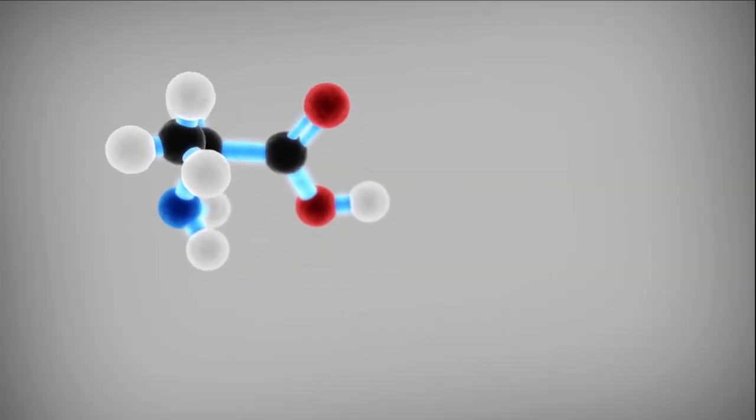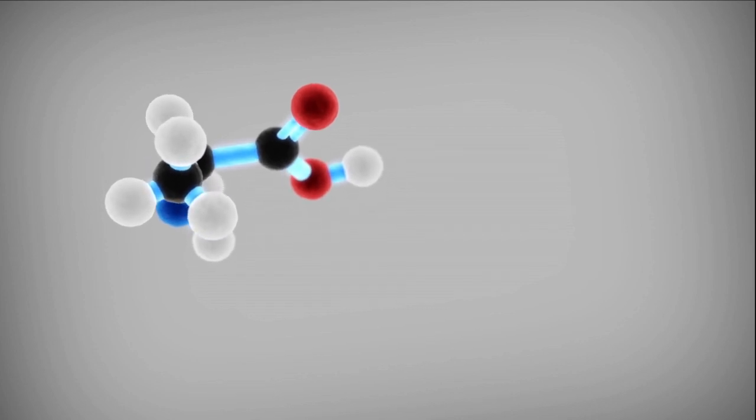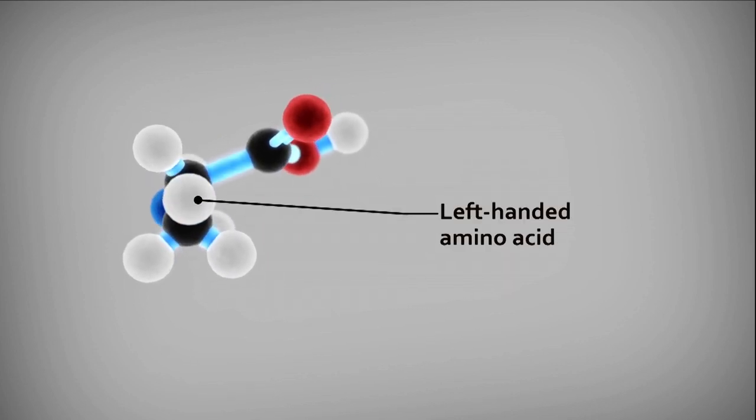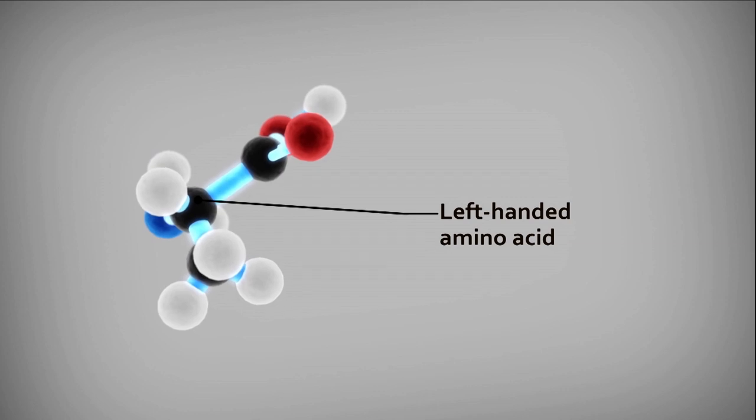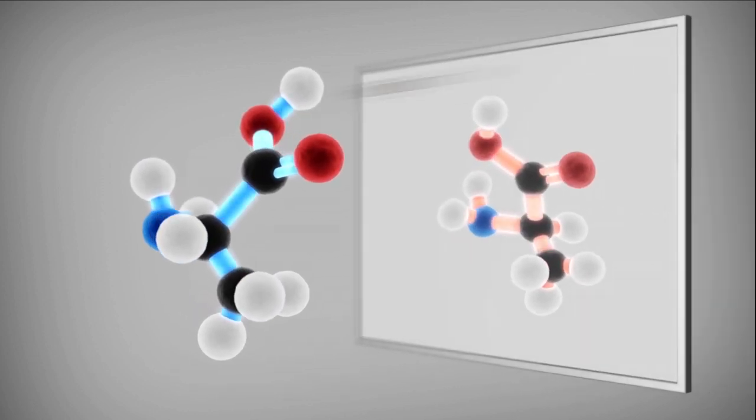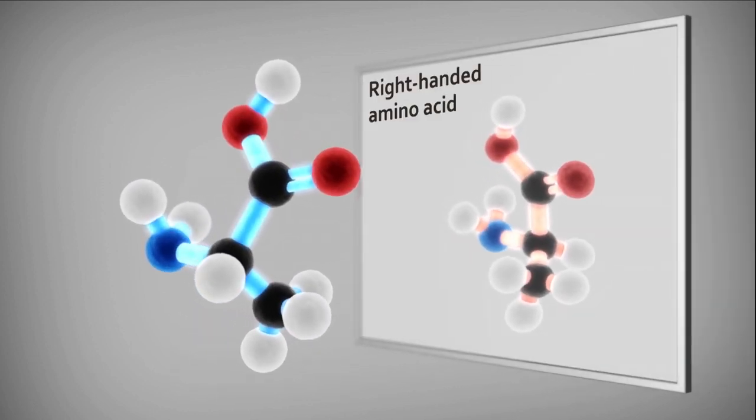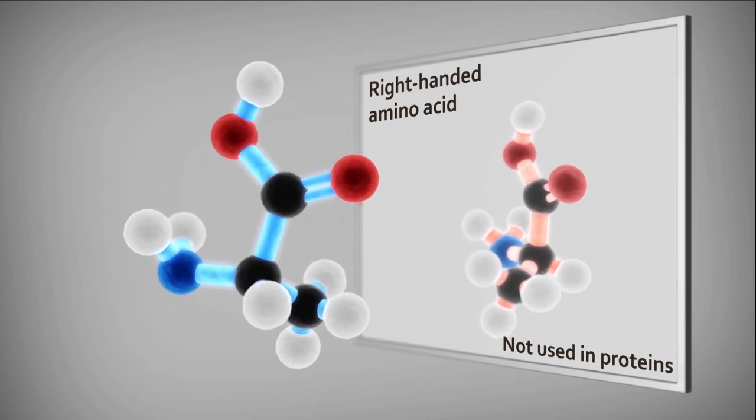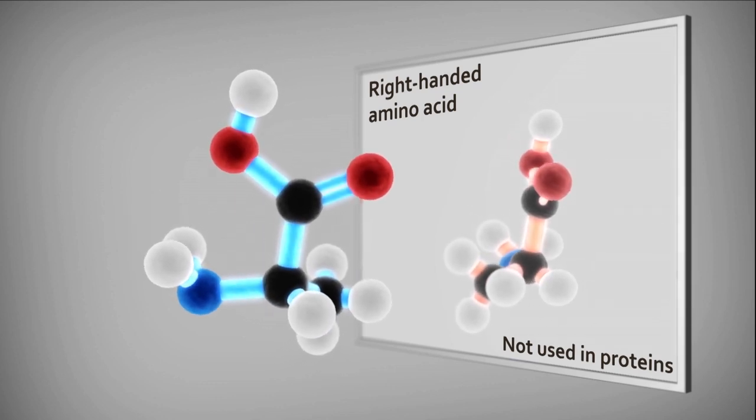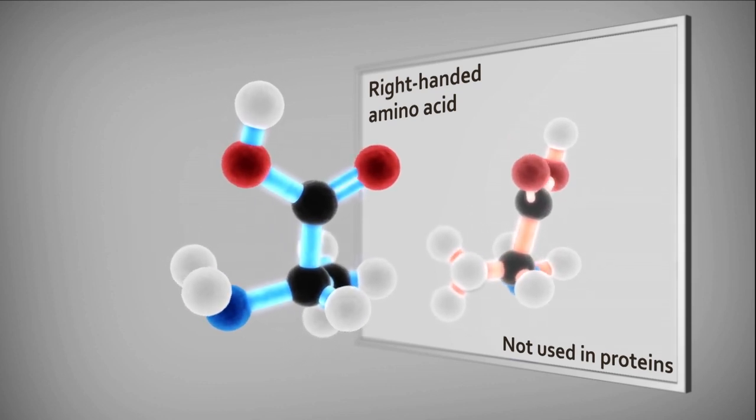Another problem with chemical evolution is called the chirality problem. Now amino acids in proteins and sugars in DNA come in two mirror image forms like your left hand and right hand. But all the amino acids in our body are left-handed and all the sugars in DNA are right-handed.